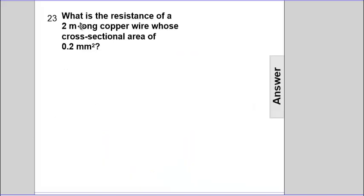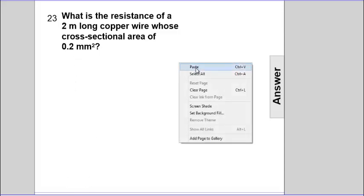What is the resistance of a 2 meter long copper wire whose cross-sectional area is 0.2 millimeter squared? So we're given a problem to solve for resistance.